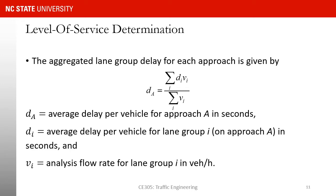We discussed in previous slides that we find control delay for each lane group and then we need to aggregate them to find the control delay for an approach. DA is the average delay per vehicle, or average control delay for approach A, in seconds. We find that by calculating a weighted average of control delay for different lane groups, and the weight that we are using is the volumes.